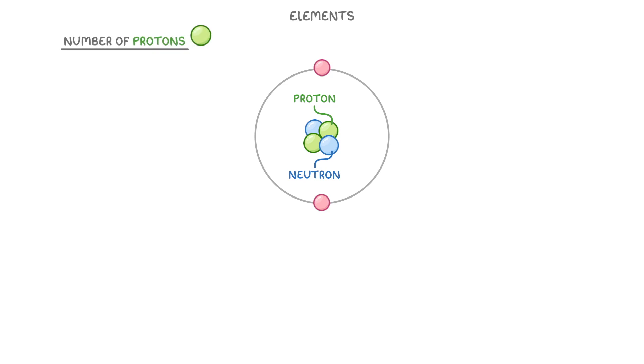We also saw that it's the number of protons that tells us which element it is. The smallest element is hydrogen, as its atoms have just one proton in their nucleus with one electron orbiting it. The next smallest is helium, whose atoms have two protons and two neutrons in the nucleus, and then two electrons orbiting them.